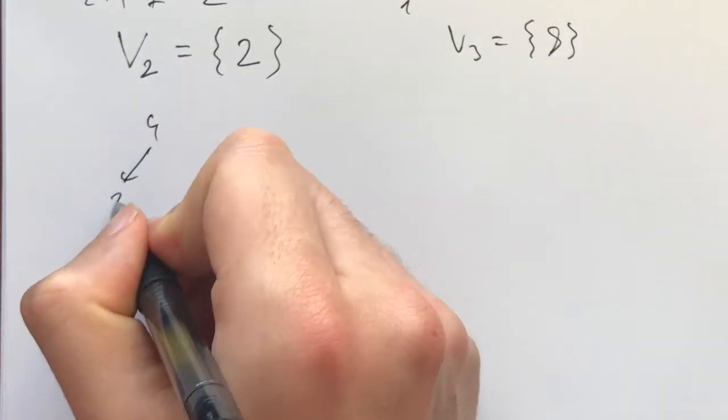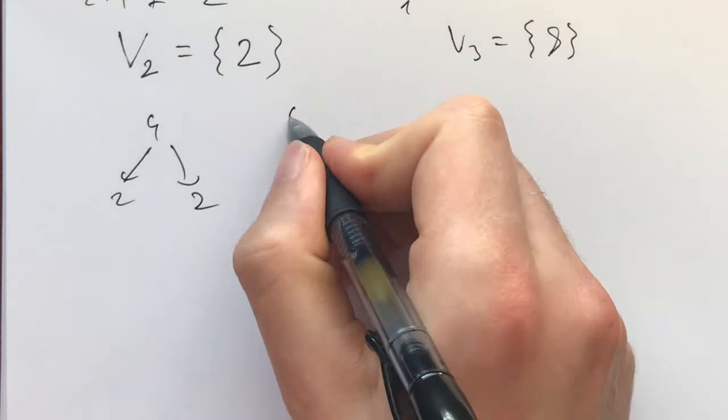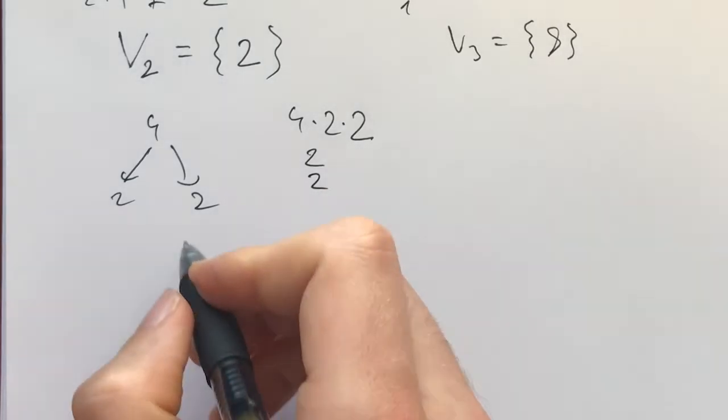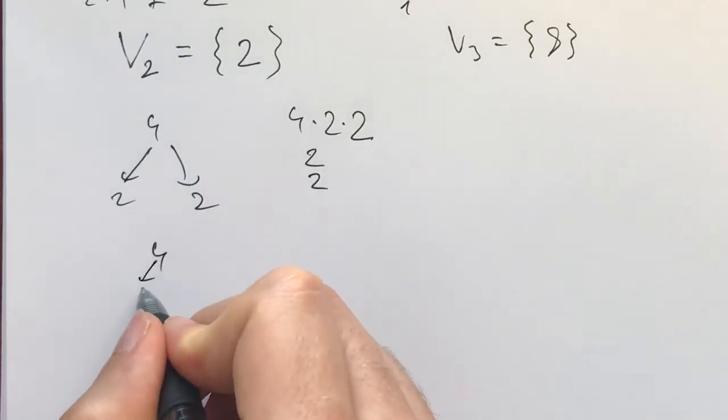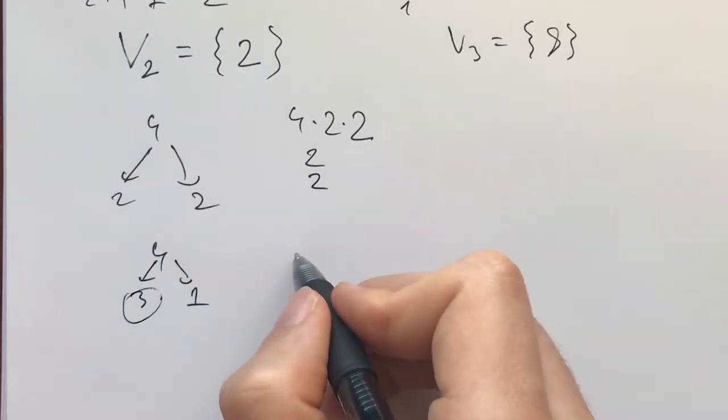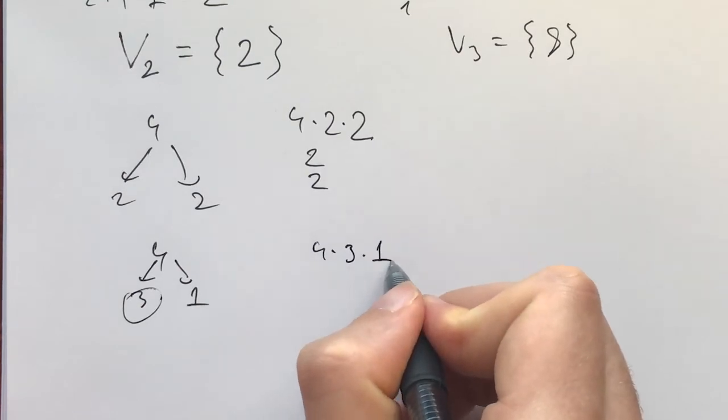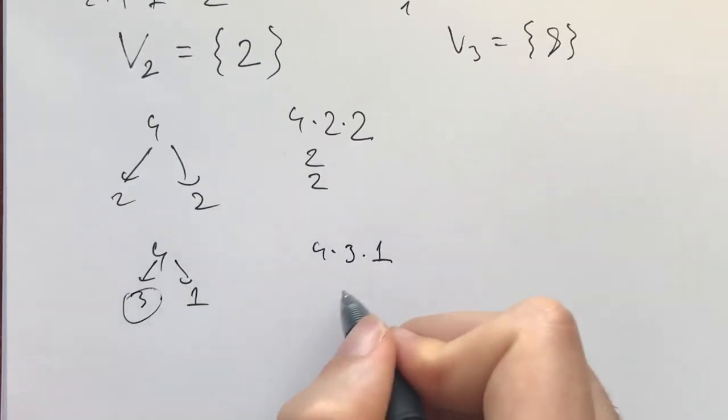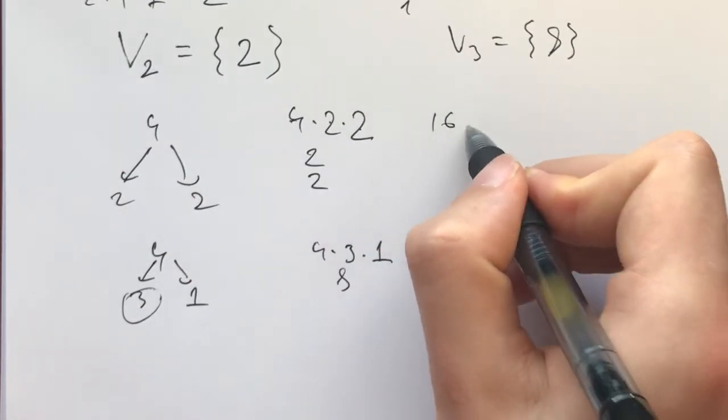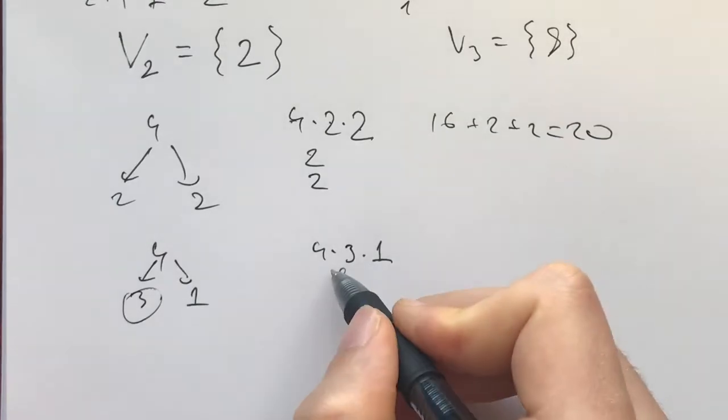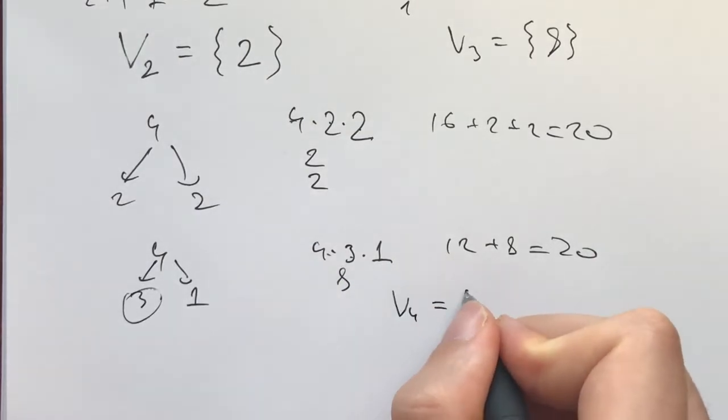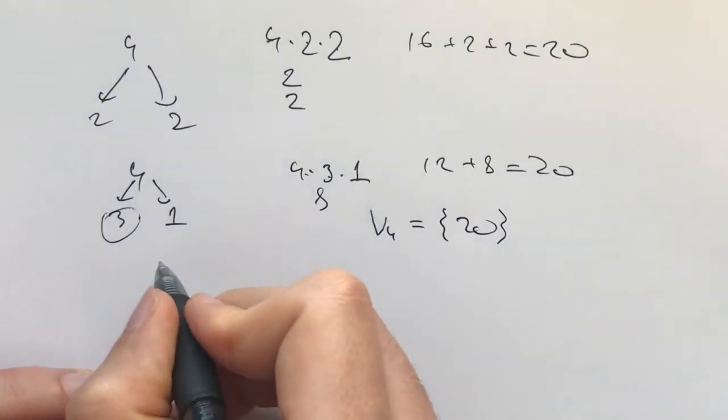Now for 4 we have two options. One is we break them up into 2 and 2, and we shall write 4 times 2 times 2, and then the 2's are deterministic, we will have 2 and 2. The other case is if we break them into 3 and 1, and now with 3, deterministic we'll get an 8, so first it's 4 times 3 times 1, and then we get an 8. So what's the sum here? The sum is 2 times 2 times 4, 16, plus 2, plus 2, 20. And here it's 12 plus 8, 20 again. So V4 is also a set with 20.